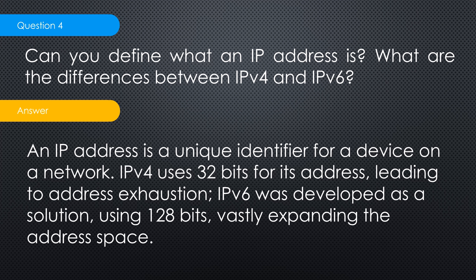Question four: can you define what an IP address is, and what is the difference between IPv4 and IPv6? An IP address is a unique identifier for a device on a network. IPv4 uses 32 bits. IPv6 was introduced with 128 bits to solve the problem of running out of IPv4 addresses. The number of IPv6 addresses is so gigantic you could allocate one to every grain of sand and still have addresses left. Every IPv6 address is unique and uniquely routable on the internet.